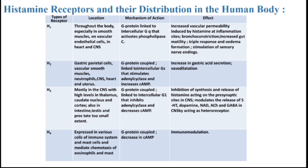H2 receptor. It is located in gastric parietal cells, vascular smooth muscle, neutrophils, CNS, heart and uterus. It acts via G protein coupled to intracellular GS that stimulates adenylyl cyclase and increases cAMP. It affects the body by increasing gastric acid secretion and vasodilation.